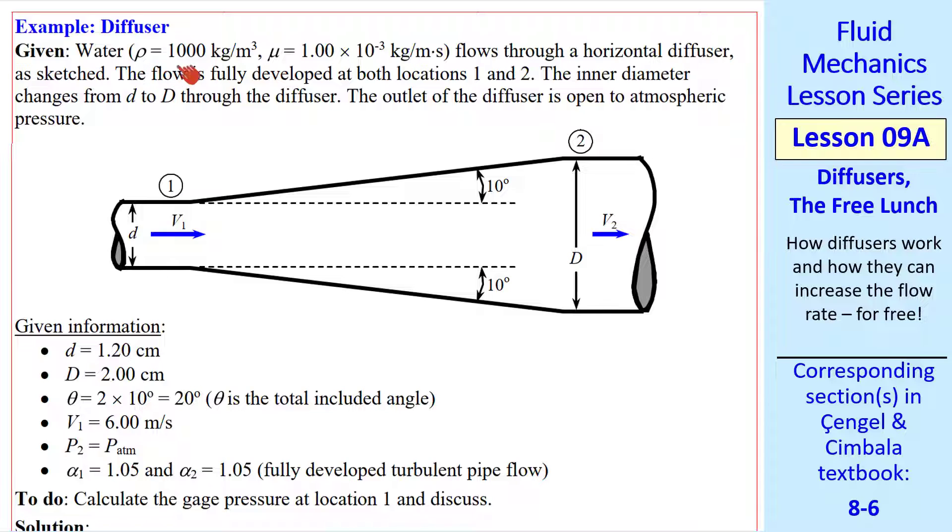Now let's do an example problem. We have water and I rounded off the density and viscosity. Flowing through a horizontal diffuser. The flow is fully developed at both locations one and two. We go from little d to capital D through a 20 degree diffuser. In other words the half angle is 10 degrees. But the total included angle is 20 degrees. By convention theta is the total included angle.